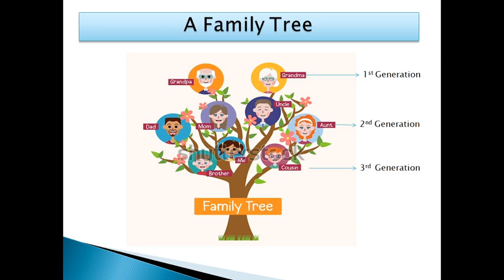Next is family tree. A family tree is a chart that shows all the people in a family over many generations and their relationship to one another. There are three generations: first is grandparents, second is parents, third is children. All family members make up the family tree. You also have a family, so make a family tree in your notebook and write down the generations.